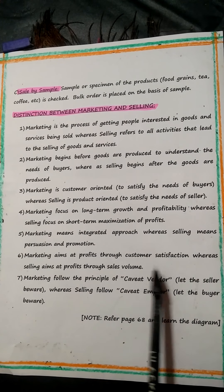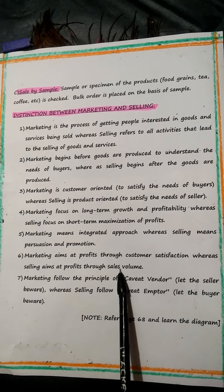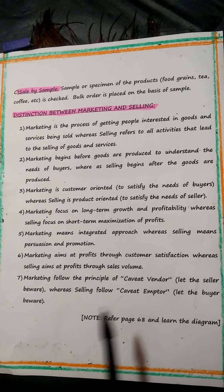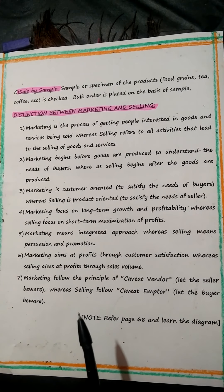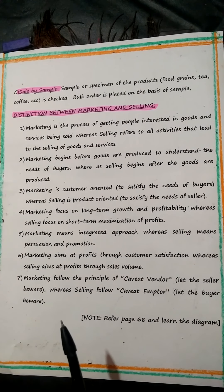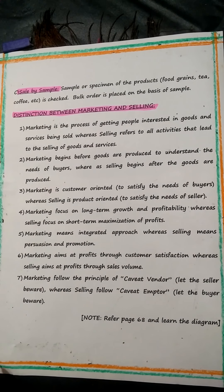Sixth point: marketing aims at profits through customer satisfaction, whereas selling aims at profits through sales volume — there will be no sales volume without customer satisfaction. Seventh point: marketing follows the principle of caveat vendor — a Latin phrase meaning 'let the seller beware' — whereas selling follows caveat emptor, meaning 'let the buyer beware.' Vendor means seller, emptor means buyer.